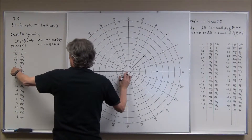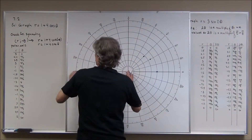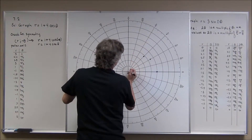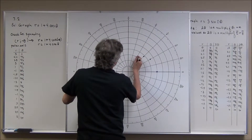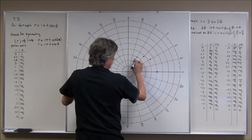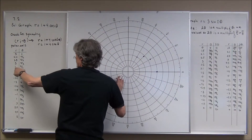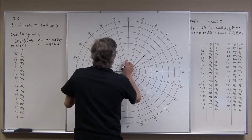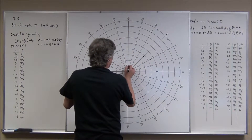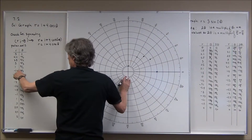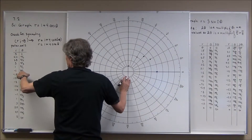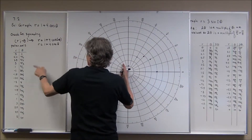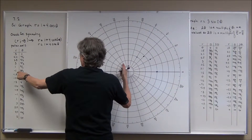Then (3, π/3) — that's this direction, 1, 2, 3. It's starting to look like maybe a circle. Then (1, π/2) — straight up, 1 right here. Then at 2π/3, my r is negative 1.